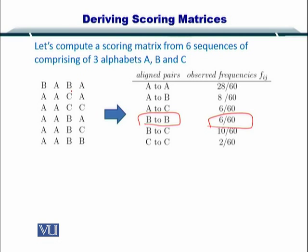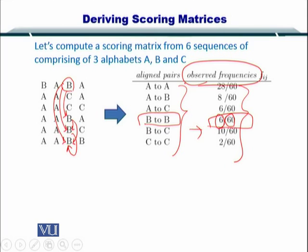So we are considering this conversion. So here is a B going to another B: one, two, three, four, five, and six. So you have six over 60. In this way, you count all of these conversions and you list the observed frequencies.